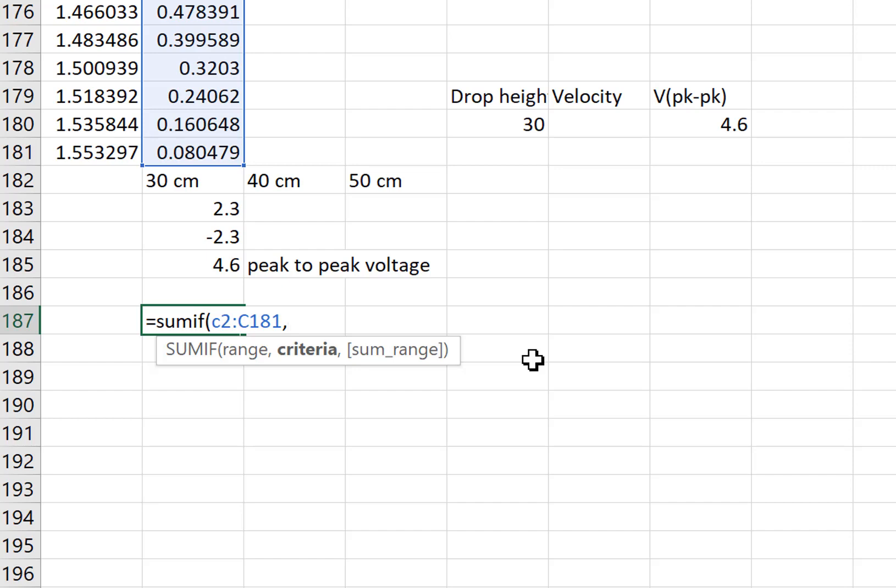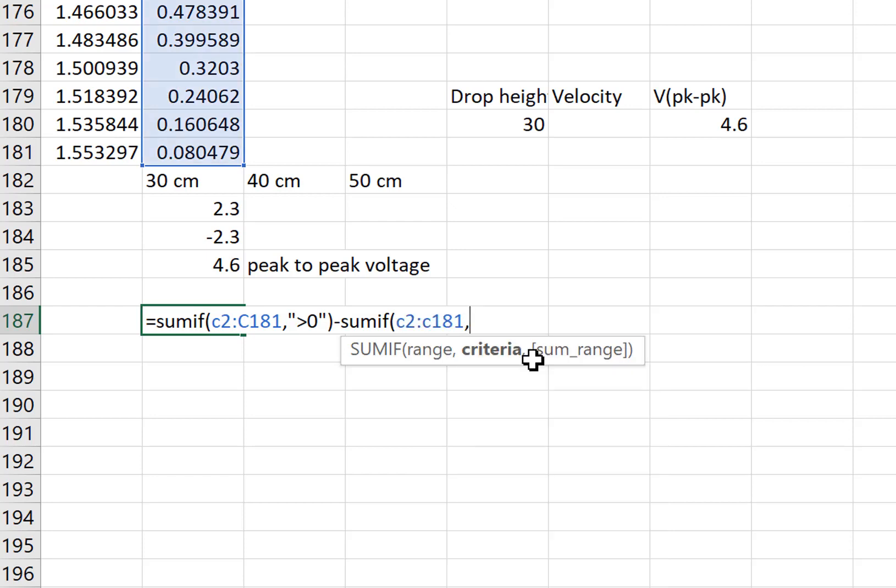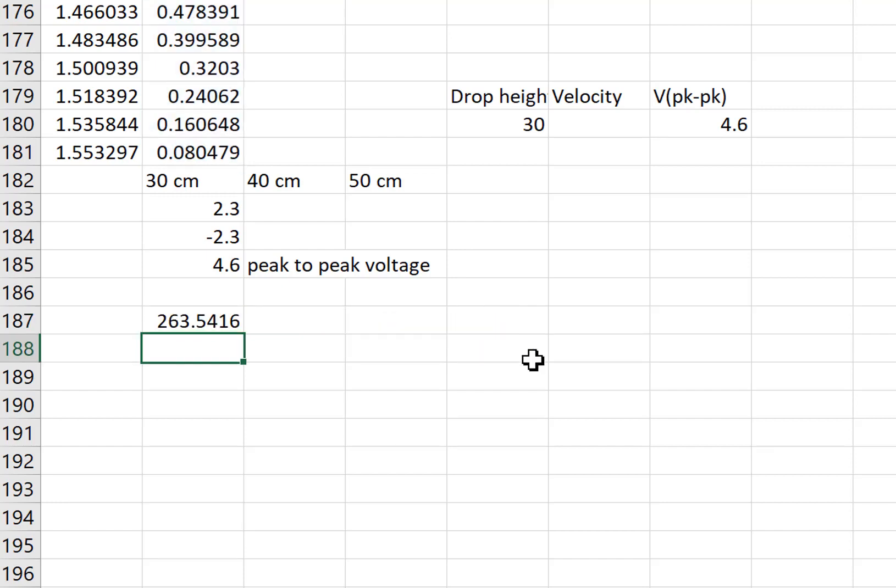And what I'm looking for is greater than zero, minus sum if C2 to C181 less than zero. So it added up all the positives and then it subtracted the sum of all the negatives, which is the same as adding the absolute value.